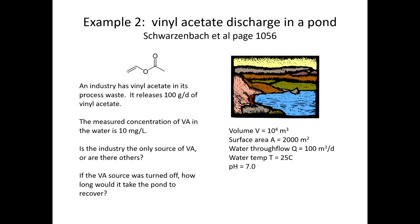The second case study is vinyl acetate discharging into a pond — this is from Schwarzenbach, page 1056. An industry releases about 100 grams per day of vinyl acetate in its process waste. The measured concentration in the pond is 10 mg/L. The question is: does the modeled input match the measured mass, or is there another source? And if the source were turned off completely, how long would it take the pond to recover? Pond parameters include surface area, volume, water flow, temperature, and pH.